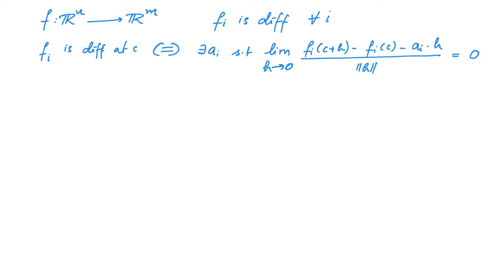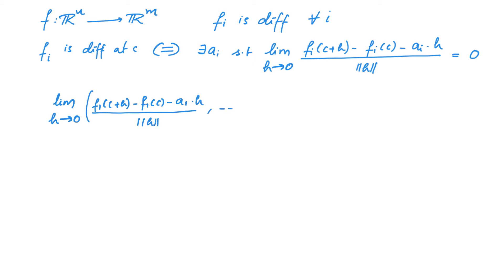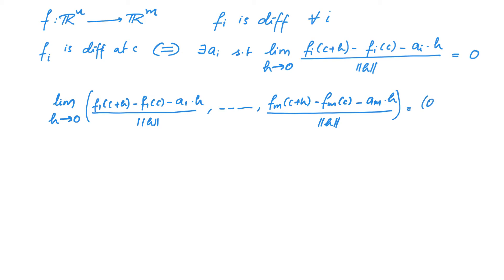We are saying this holds for all i. From what we know about limits, we can rewrite this as the limit as h tends to 0 of the vector ([f1(c+h) - f1(c) - a1·h] / ‖h‖, [f2(c+h) - f2(c) - a2·h] / ‖h‖, ..., [fm(c+h) - fm(c) - am·h] / ‖h‖) equals the zero vector. In other words, there exist m vectors a1, a2, ..., am such that this holds.